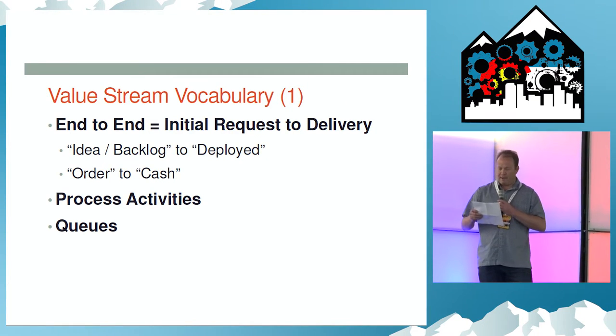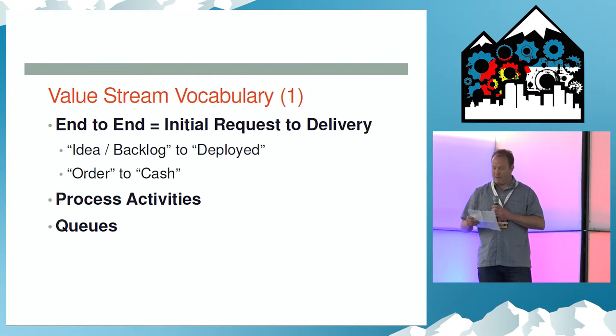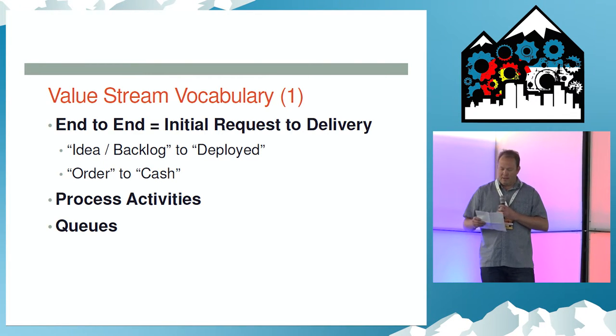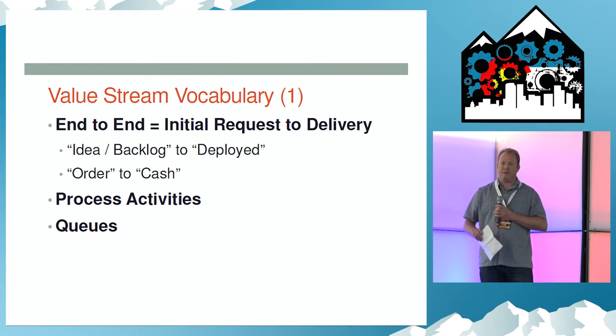Let's start with vocabulary. End-to-end means from the customer's viewpoint, so we optimize the entire flow. In agile delivery, it could be product backlog to deployed, or it could be order to cash, for example.